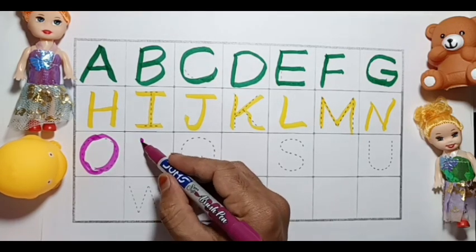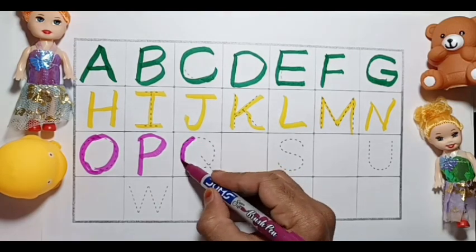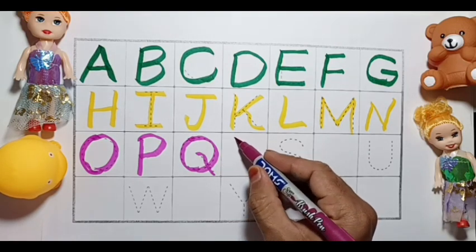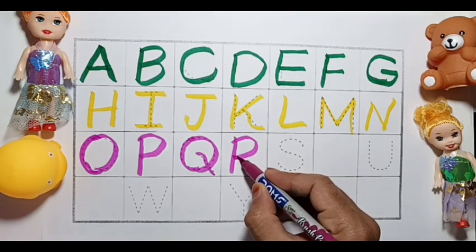P P P for Peacock. Q Q for Queen. R R R for Rose.